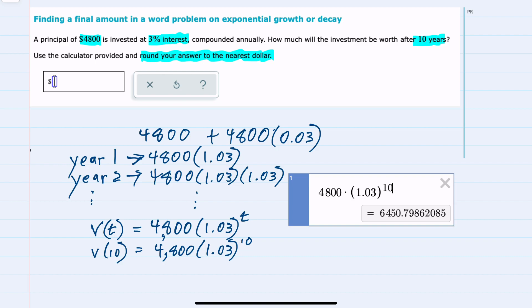And if we put this into a calculator, here I use Desmos, we would enter the original $4,800, and then since only the 1.03 is being raised to the exponent, I like to use parentheses, 1.03, the carat to get the exponent, which here is 10.